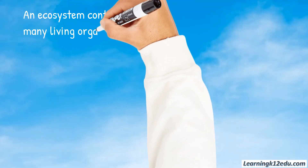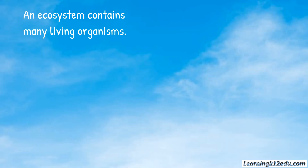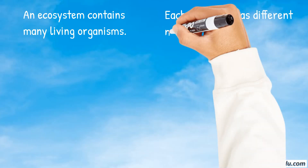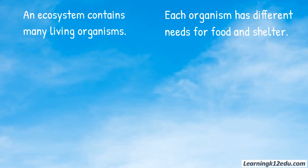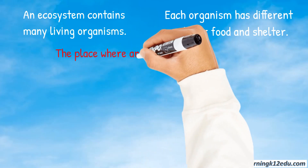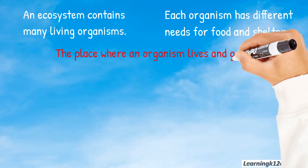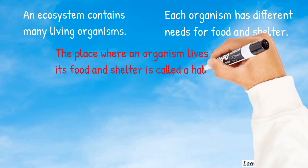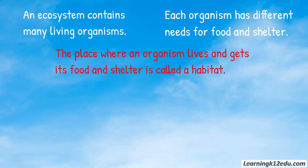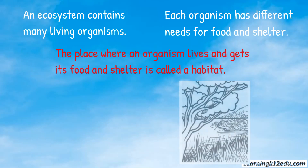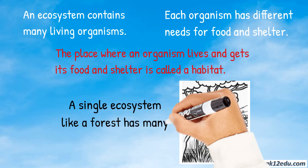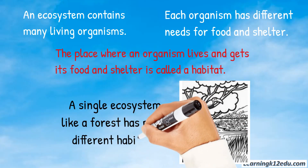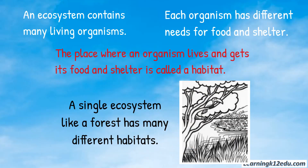An ecosystem contains many living organisms. Each organism has different needs for food and shelter. The place where an organism lives and gets its food and shelter is called the habitat. A single ecosystem like a forest has many different habitats.